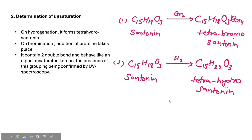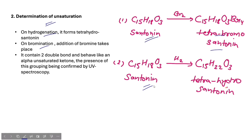The second point is Determination of Unsaturation. To determine the degree of unsaturation in Santonin, we will use either Hydrogenation or Bromination. When we subject Santonin to Bromination, we get the product Tetrabromo-Santonin. And if we use Hydrogenation, we get Tetrahydro-Santonin.